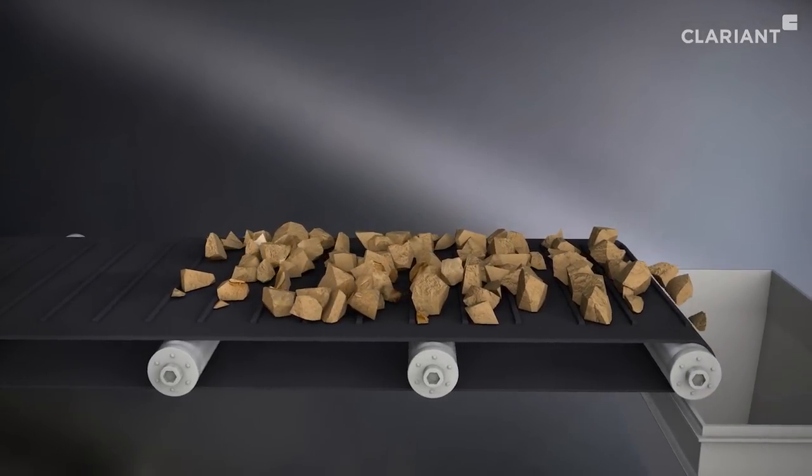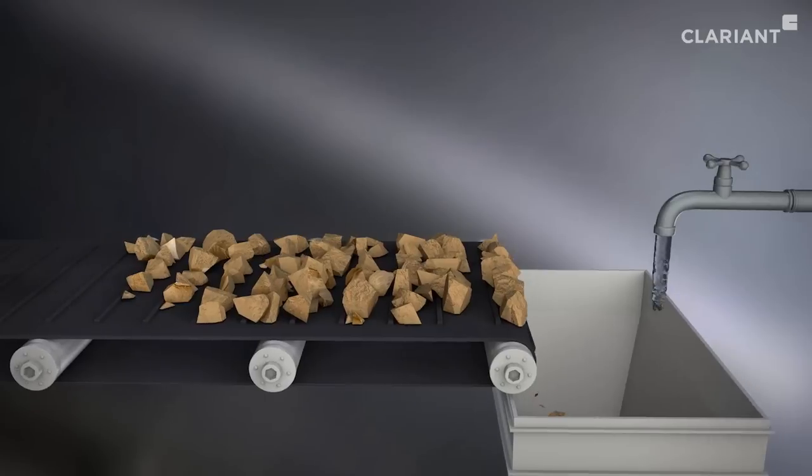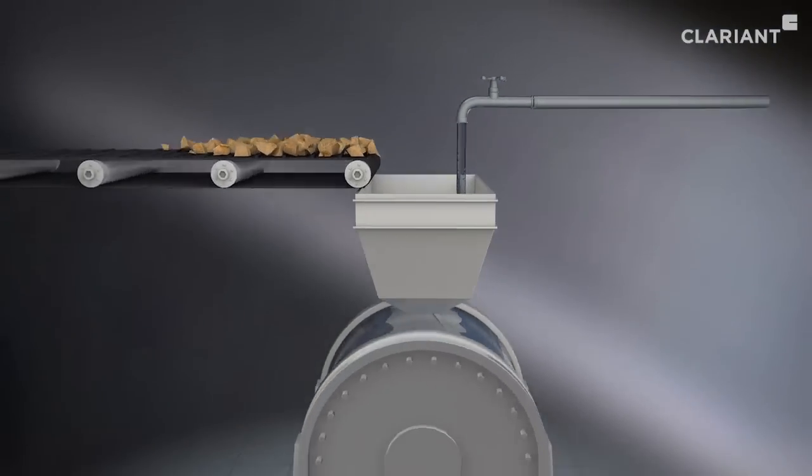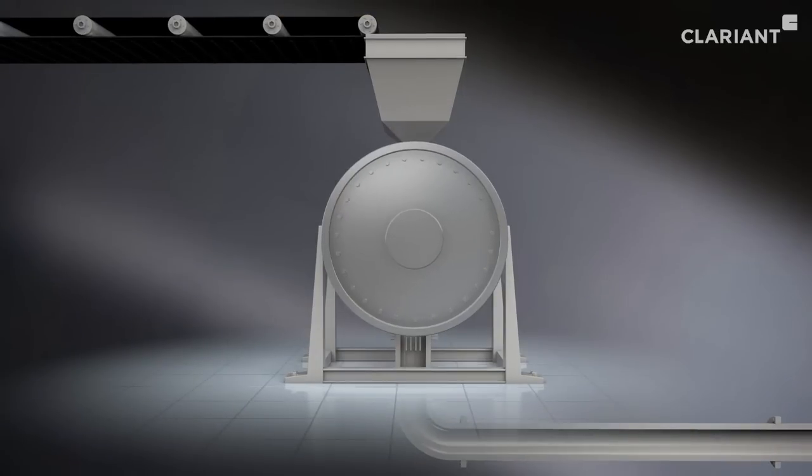Bentonite is processed into the Clariant product tonsil by first mixing it in crushed form with water to prepare an aqueous suspension. In this mixture, the solids are then further crushed until they are finally distributed in the water.